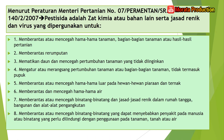Menurut Peraturan Menteri Pertanian Nomor 07/SR tahun 2007, pesticida adalah zat kimia atau bahan lain serta jasad renik dan virus yang dipergunakan untuk: pertama, memberantas atau mencegah hama-hama tanaman, bagian-bagian tanaman, atau hasil-hasil pertanian. Kedua, memberantas rumputan. Ketiga, mematikan daun dan mencegah pertumbuhan tanaman yang tidak diinginkan.